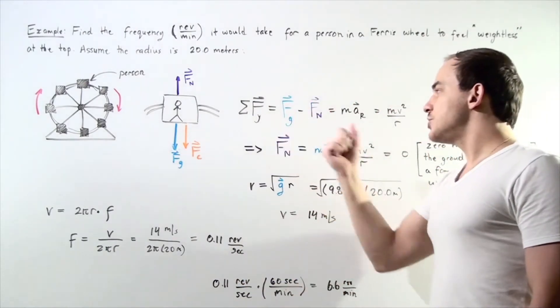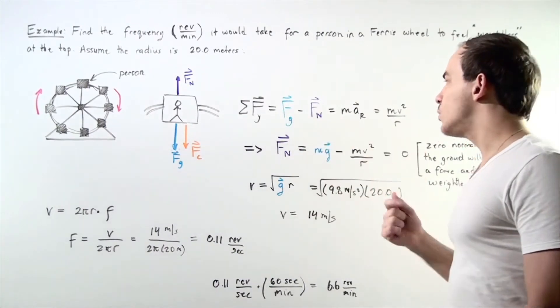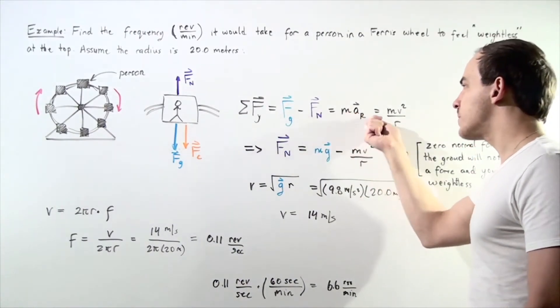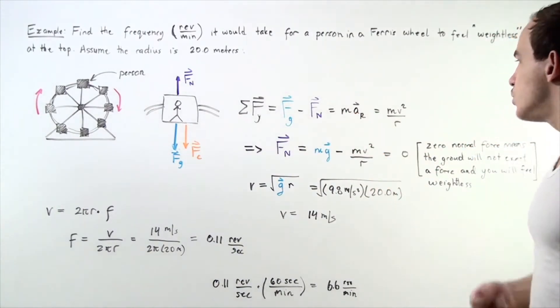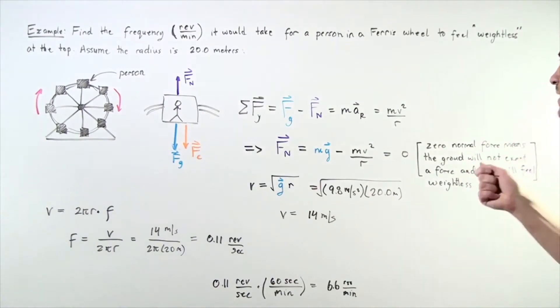The gravitational force minus the normal force is equal to mass times our centripetal acceleration, which equals mass times v squared divided by r, because our radial acceleration equals v squared divided by r.